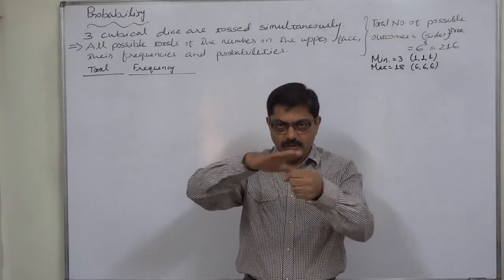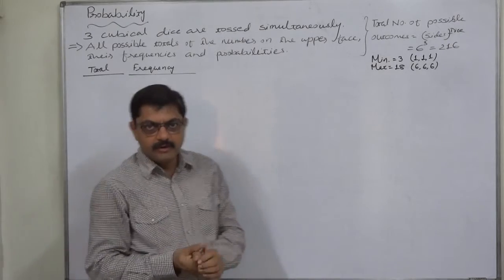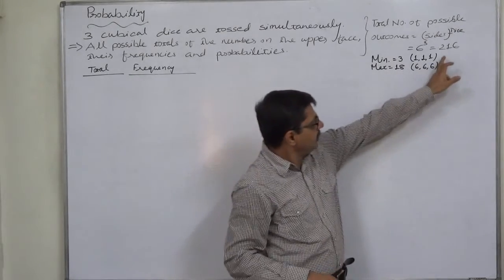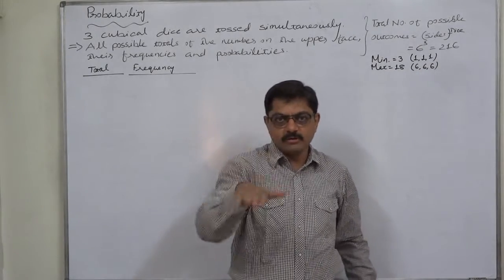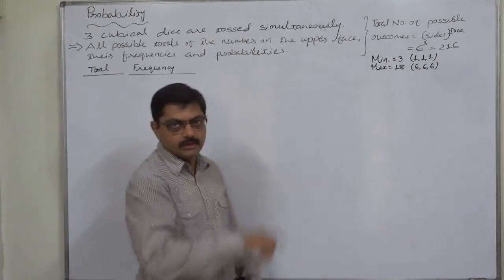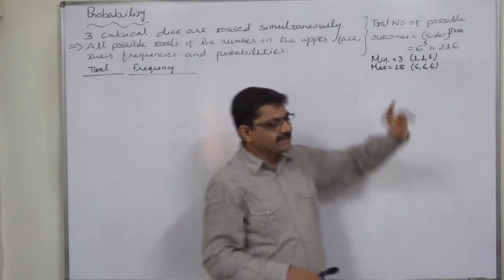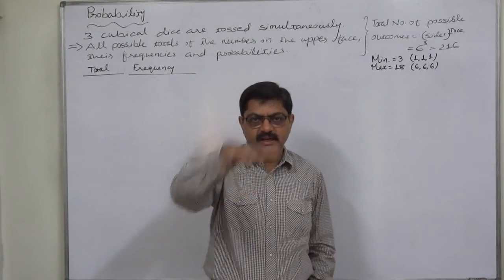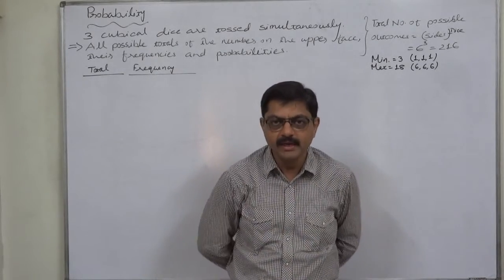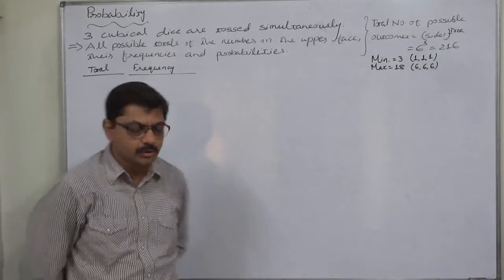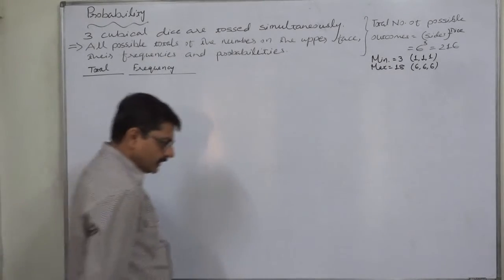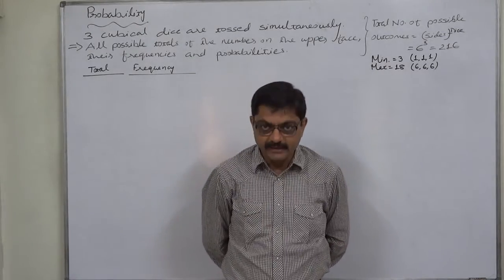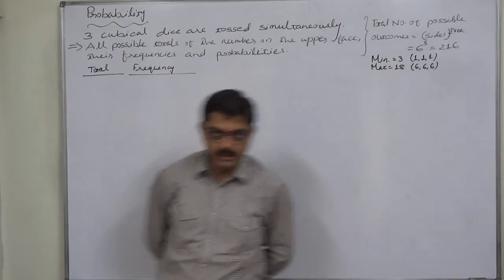On the upper face of all three dice, whatever number comes, we are interested in their totals. The minimum total will be three — one on the first die, one on the second die, and one on the third die. Similarly, the maximum possible total is eighteen — six on first, six on second, and six on third. So minimum total is three, maximum possible total is eighteen, meaning all other totals will be between three and eighteen.